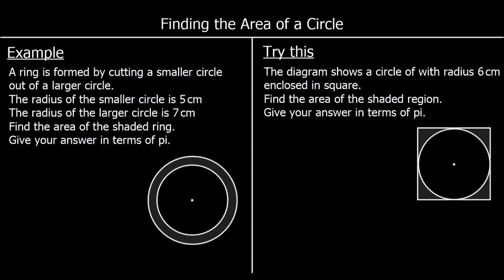Here we have a different question. This time we've got a ring, which is formed by cutting a small circle out of a big circle. The radius of the small circle is 5 centimetres and the radius of the large circle is 7 centimetres. We're going to find the area of the shaded ring by finding the area of the big circle and the area of the small circle, and taking the small one away from the big one.